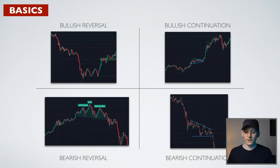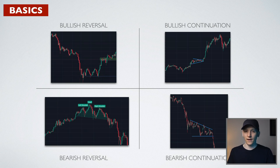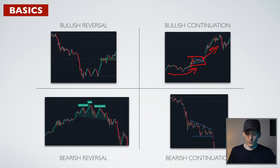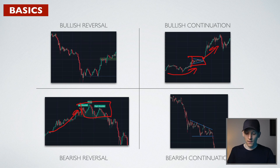A bullish reversal: we're in a downtrend, but a chart pattern signals a bullish reversal so we take a long position as the downtrend reverses to the upside. A bullish continuation is within an uptrend where the chart pattern tells you bullish momentum will continue, so you take upward trades. A bearish reversal is where you're in an uptrend but the chart pattern tells you the uptrend will reverse, so you take bearish trades to the downside. A bearish continuation is within a downtrend — the chart pattern confirms the downtrend may continue, so you maintain your bearish trades.